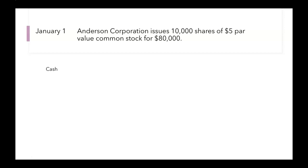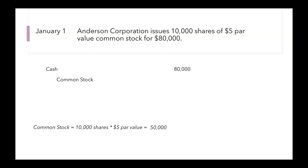Now why are we getting this cash? Because we're issuing stock. So we'll credit our common stock. How much cash are we getting? We're issuing these shares for $80,000, so we're getting $80,000 in cash. For common stock, we take our number of shares times our par value — 10,000 shares times $5 par value — and we get $50,000. So we'll credit common stock for $50,000.